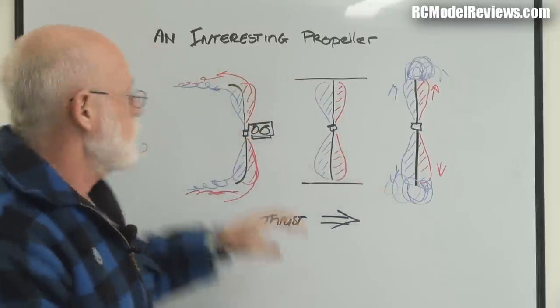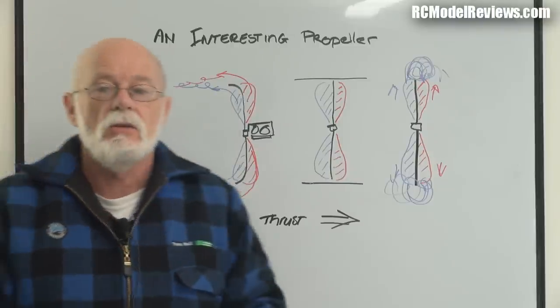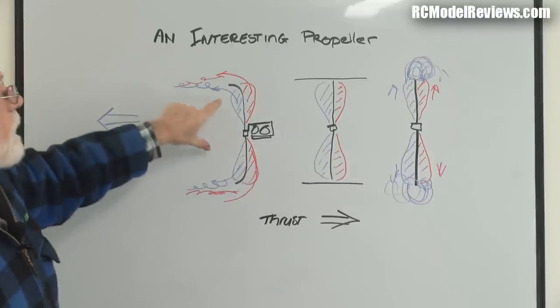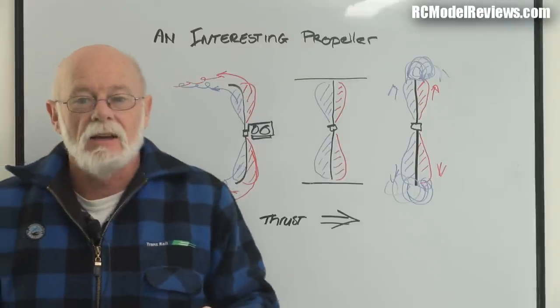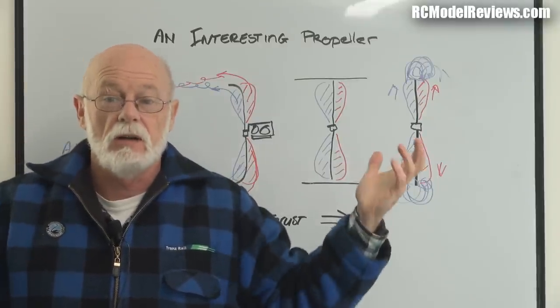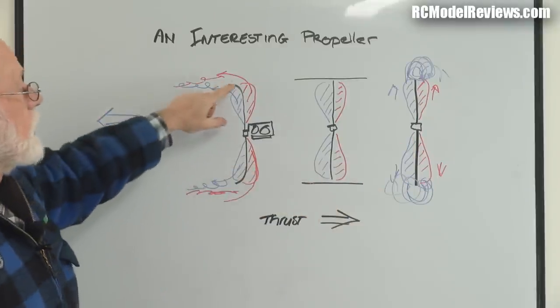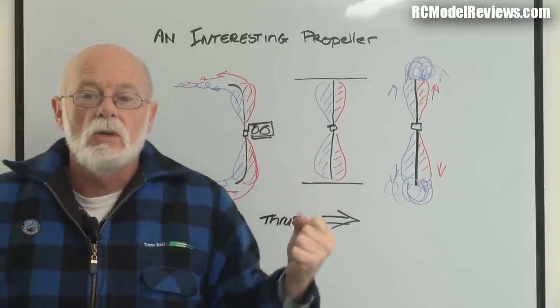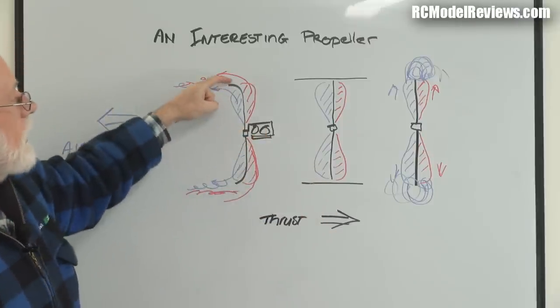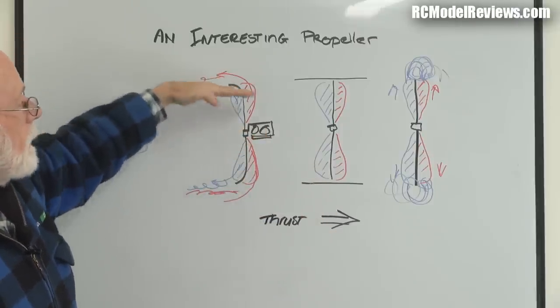That's why they make these things—mainly because of the noise. Yes, in theory there's a performance improvement, but rarely is it a gain. Otherwise you'd see it on commercial aircraft. The main use of these curved tips is to reduce the size of the tip vortex, which reduces noise.